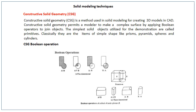The second solid modeling technique is constructive solid geometry (CSG). A solid final end product is formed by constructive boolean operations. CSG is a method used in solid modeling for creating 3D models in CAD, and it permits a modeler to make complex surfaces by applying boolean operations: A union B, A intersection B, A minus B, and B minus A.